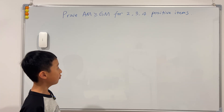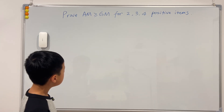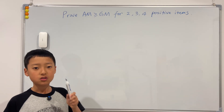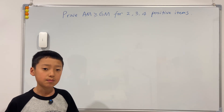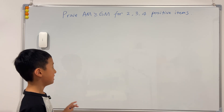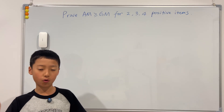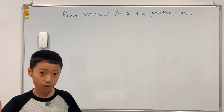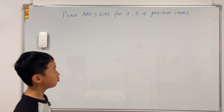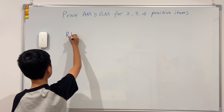We want to prove AM ≥ GM for two, three, and four positive items. I'm going to use the exact same logic from the last video: I'll first prove the easiest case, which is two items, then jump to four, and then go backwards from four to three. So let's first try to prove for two values.